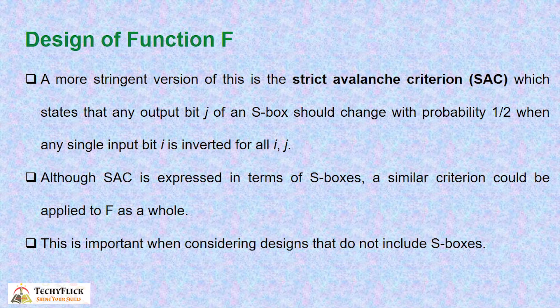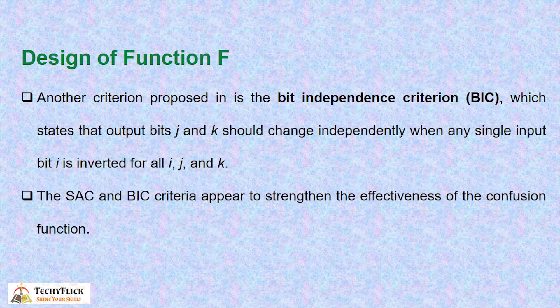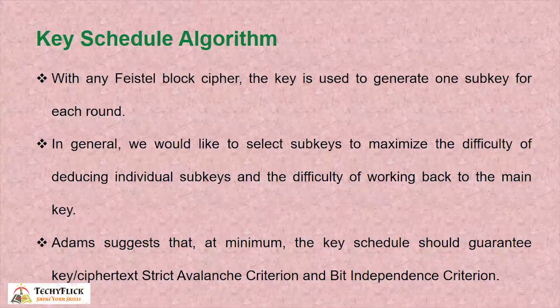For the function design, we apply the Avalanche effect — changing one input bit should affect the whole output. We use S-boxes, specifically 8 S-boxes, and we also design for the Bit Independence Criterion (BIC), which states that output bits j and k should change independently when any single input bit is inverted, for all i, j, and k. SAC and BIC are the two criteria used to strengthen the confusion function and key schedule algorithm.